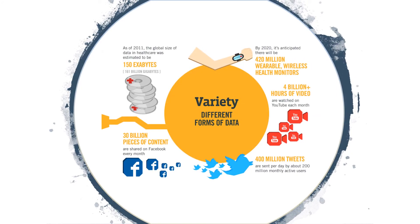Now we get to the third aspect of big data: variety. What we mean here is that it's not just the rows and columns of a nicely formatted data set in a spreadsheet. Instead, you can have many data sheets in many different formats. You can have unstructured text like books, blog posts, comments on news articles, and tweets. One researcher has estimated that 80% of enterprise data may be unstructured, so it's the majority and the common case.